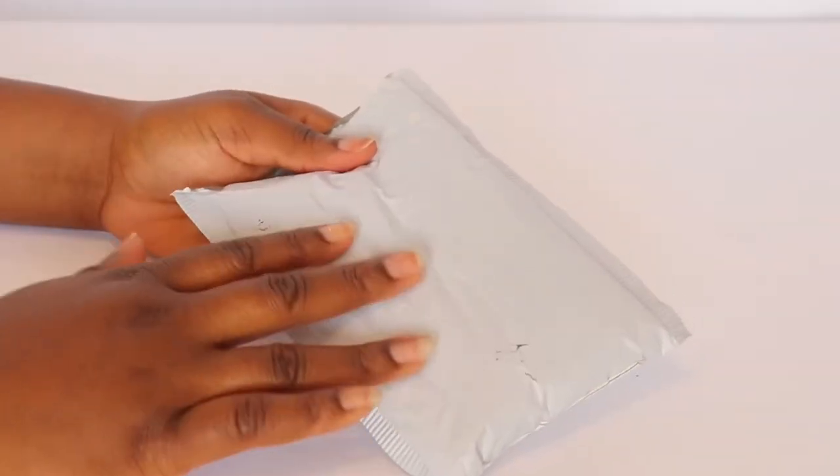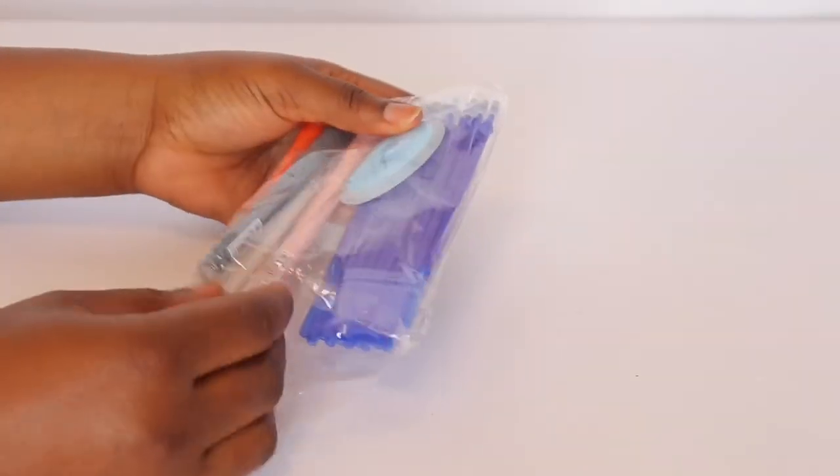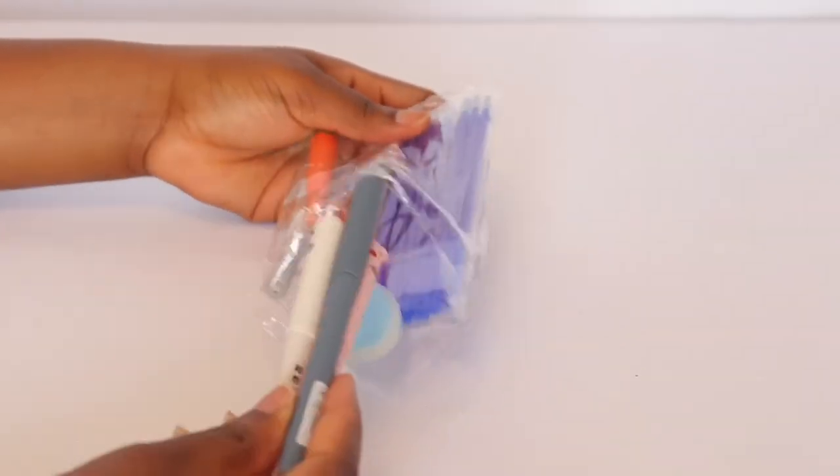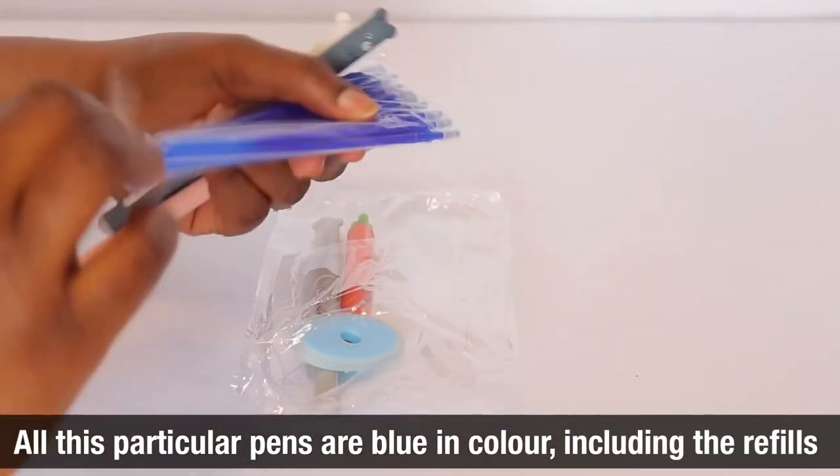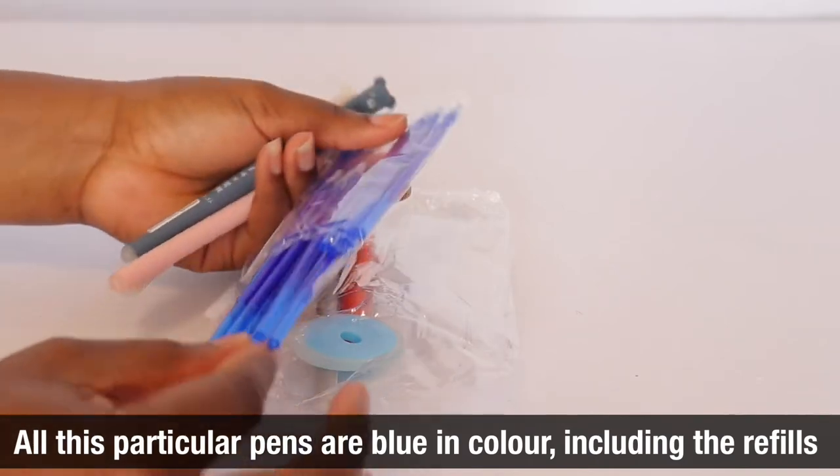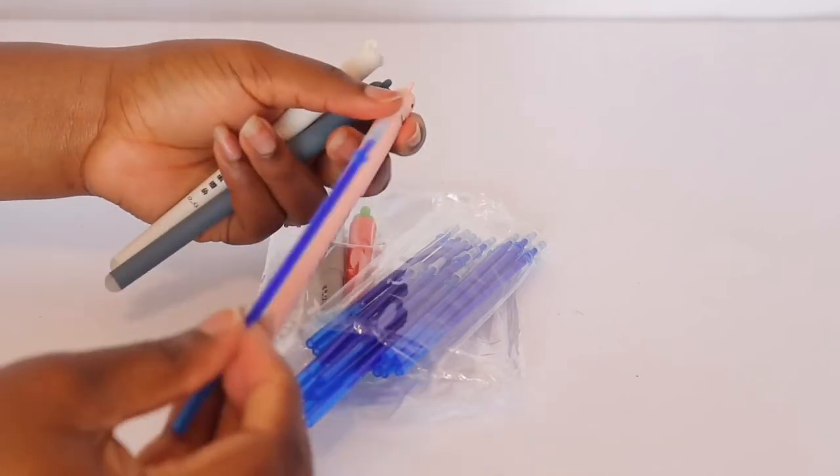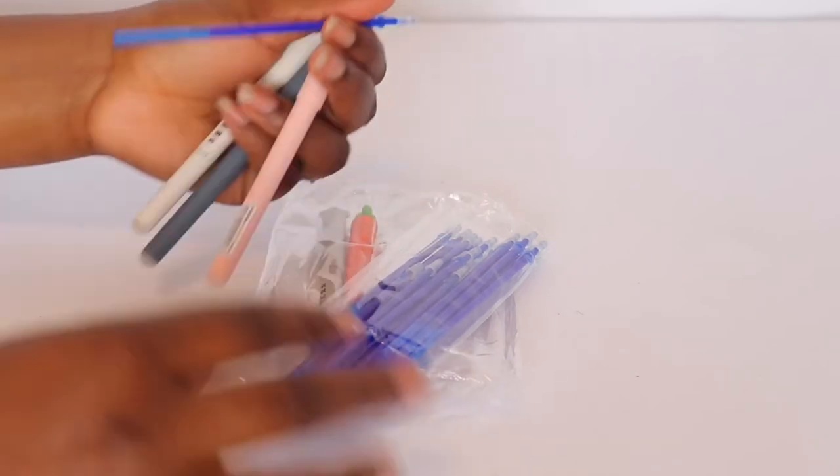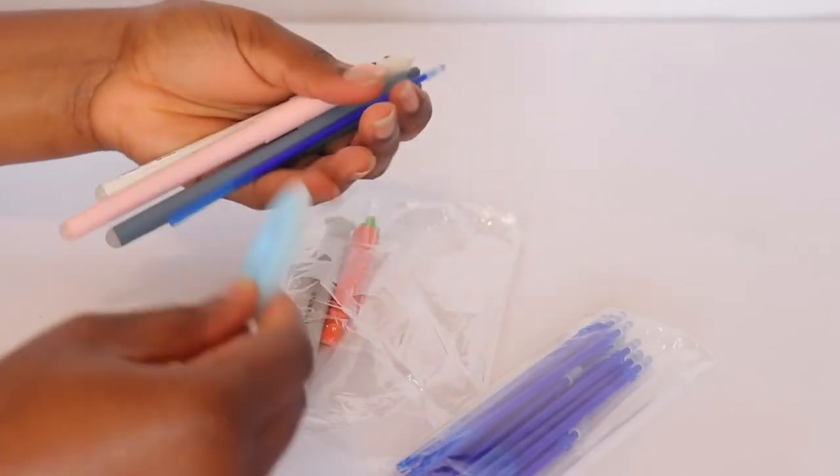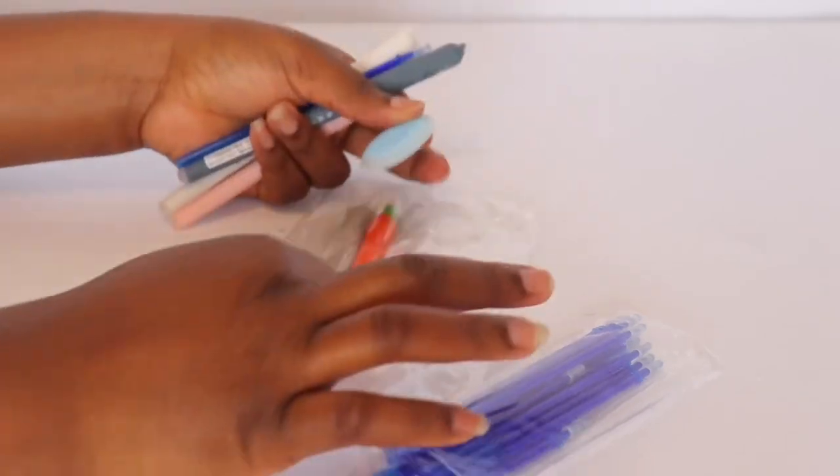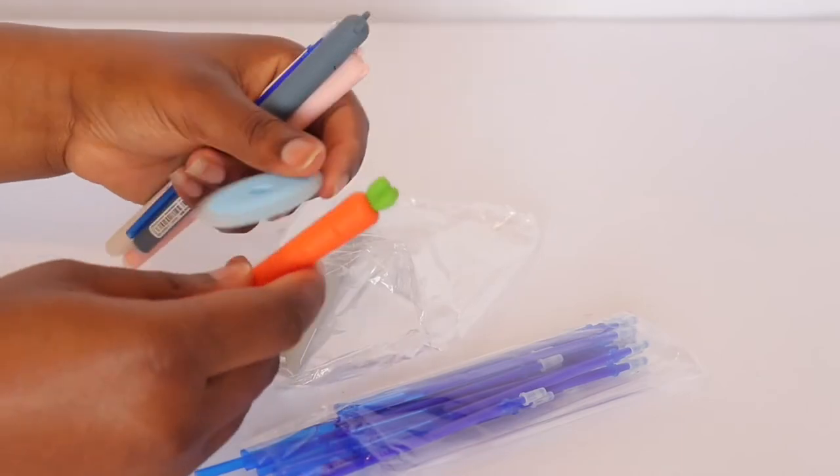The next package I have to show you guys is this package. I have already opened them. This is actually a bunch of pens. And these are the refills, like the refill ink. So after this is finished, I just put this in here and refill it. And this is actually eraser to erase. Let me just show you guys what I'm talking about. And this little carrot-look-alike, this little carrot stuff, is also an eraser.